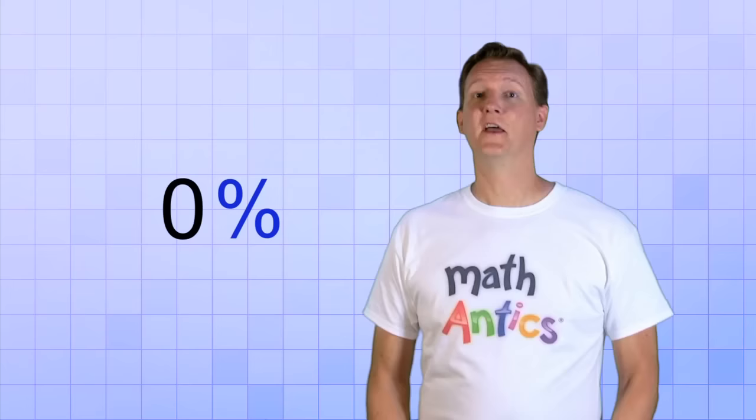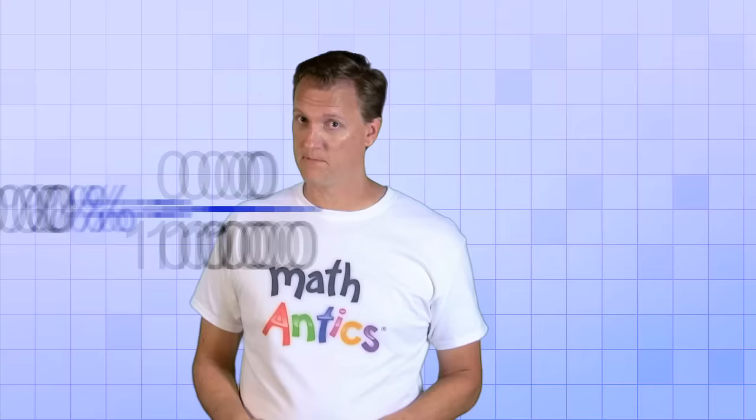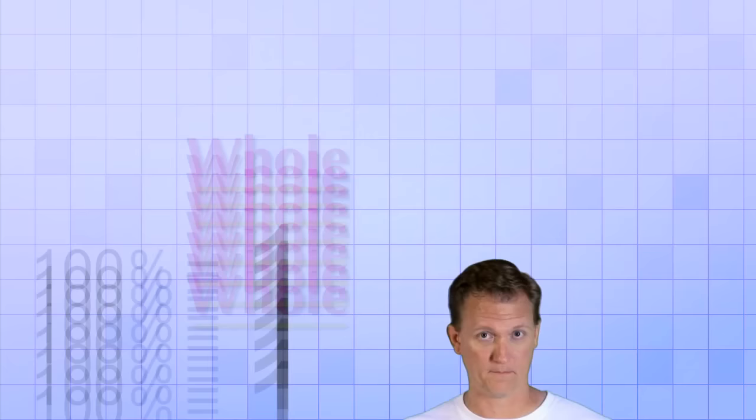Like this one, 0%. Can you have 0%? Yes, 0% would just mean 0 over 100. It's what we like to call a 0 fraction, because its value is just 0. Remember, it's okay to have 0 on the top of a fraction, but not the bottom. Alright then, what about 100%? Well, 100% just means 100 over 100. That's what we like to call a whole fraction. The top number is the same as the bottom, so its value is just one whole.